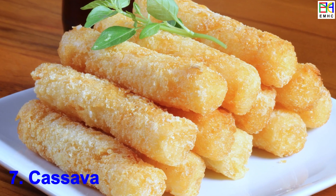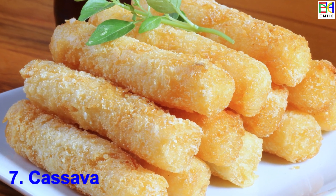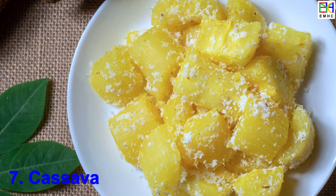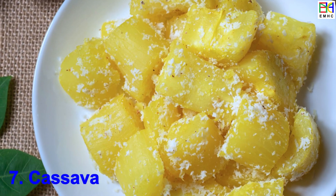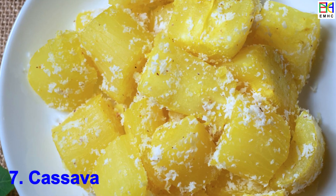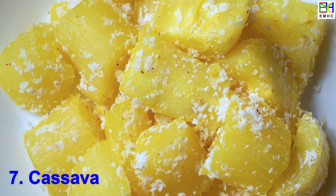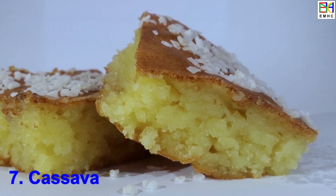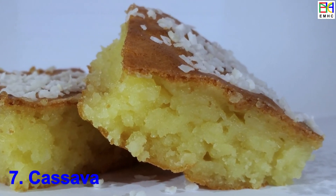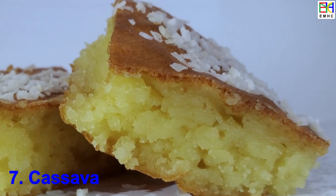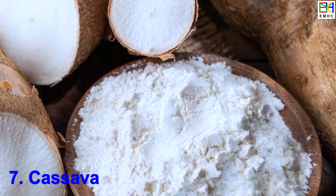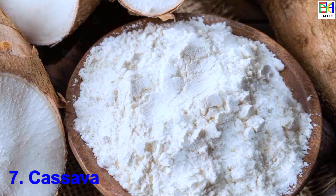Cassava can be boiled, steamed, fried, roasted, or processed into starch, tapioca pearls, and chips. Cassava flour is used to make bread, cakes, cookies, and other baked goods.